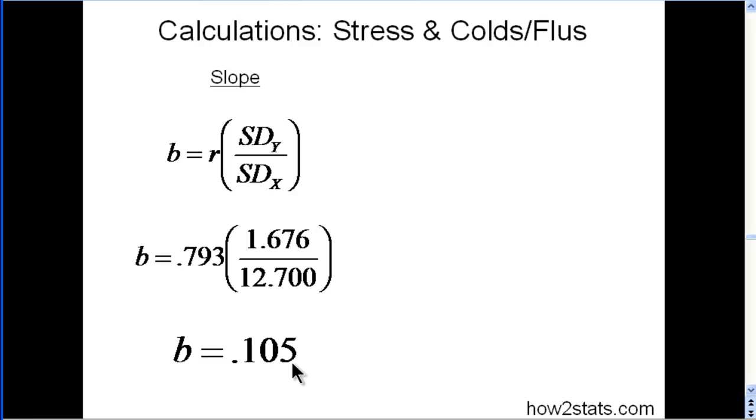But these scores on the stress measure are much bigger. They range much more than one point. So it's very conceivable that somebody can have 10 units increase in stress, and that's when we'd expect about one cold, one extra cold. So one unit equals 0.1 of a cold. 10 units increase in stress would equal about one extra cold.